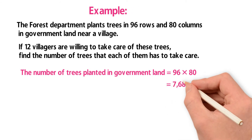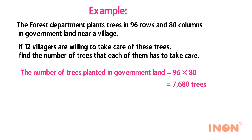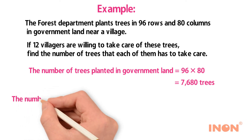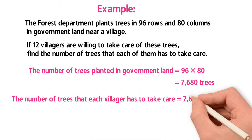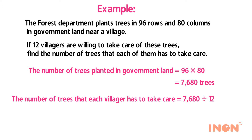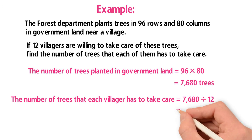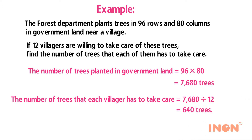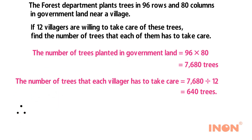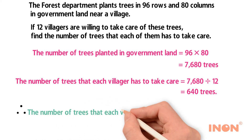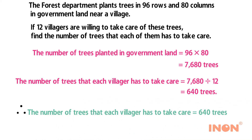The number of trees that each villager has to take care of equals 7,680 divided by 12, which equals 640 trees. Therefore, the number of trees that each villager has to take care of is 640 trees.